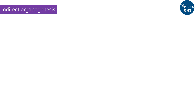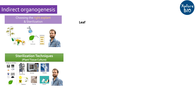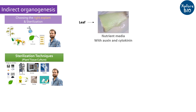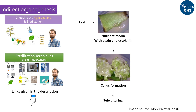First, let's learn about indirect organogenesis. In indirect organogenesis, you take an explant which may be a section of leaf, shoot, or root. Suppose you take leaf tissue as an explant. After surface sterilization to remove any contaminants such as bacteria or fungi, it is kept on nutrient media containing both auxin and cytokinin to initiate cell division and form an unorganized mass of cells called callus. Callus is regularly subcultured on fresh media after every few weeks to supply more nutrients and hormones. To learn more about explant selection and sterilization procedure, you can check out my videos on them.